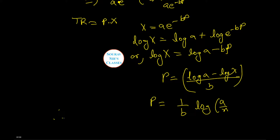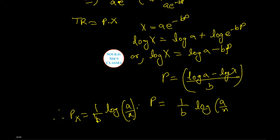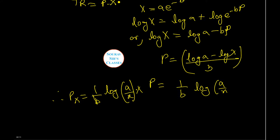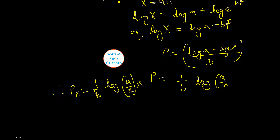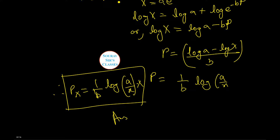Therefore P·x equals (1/B)·log(A/x)·x. This is our total revenue TR as a function of x, which is our required answer.